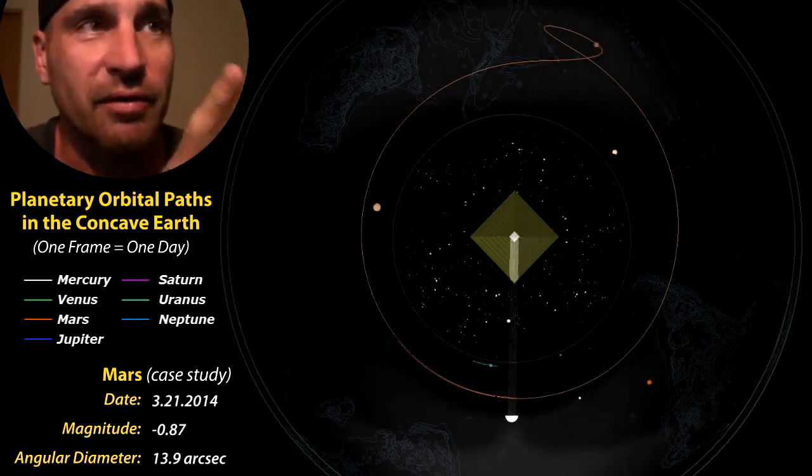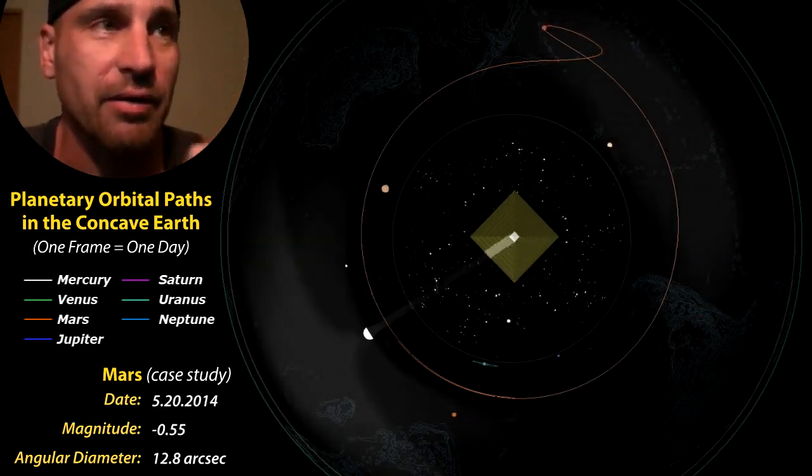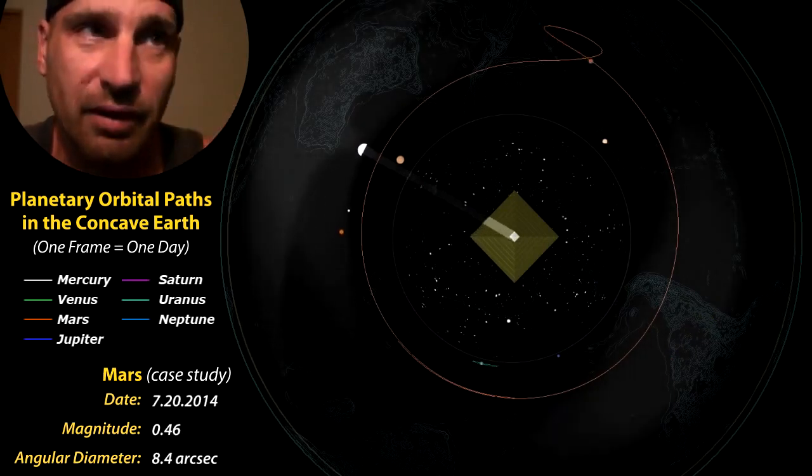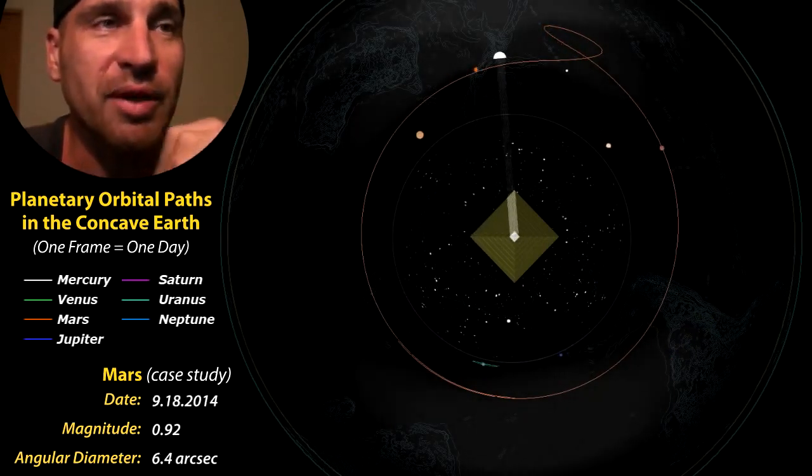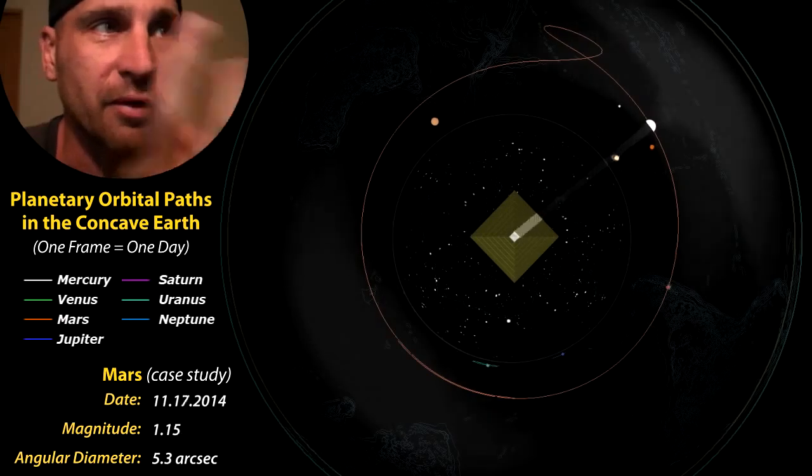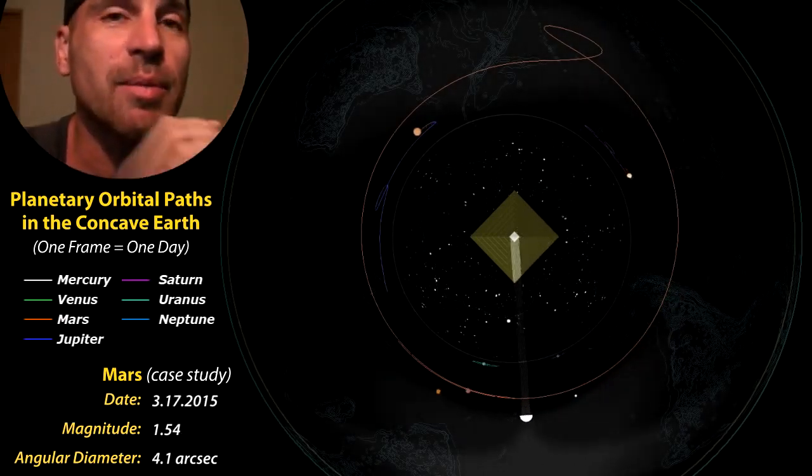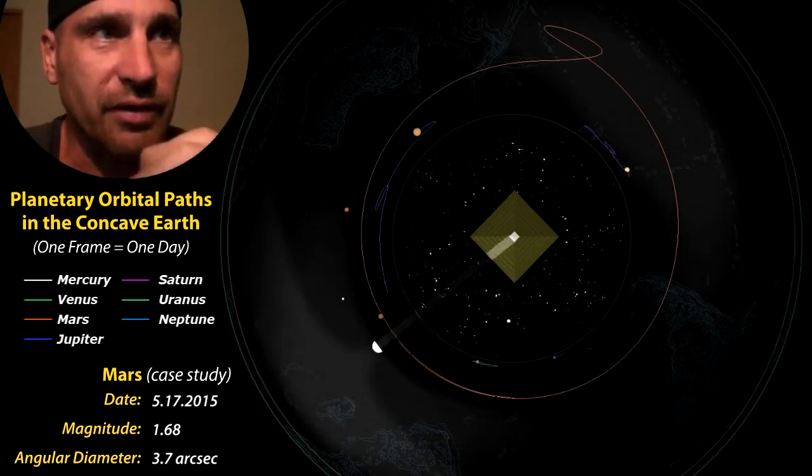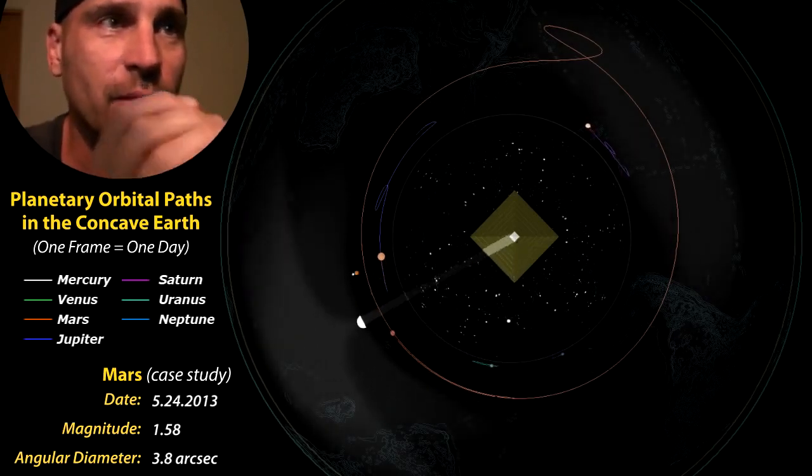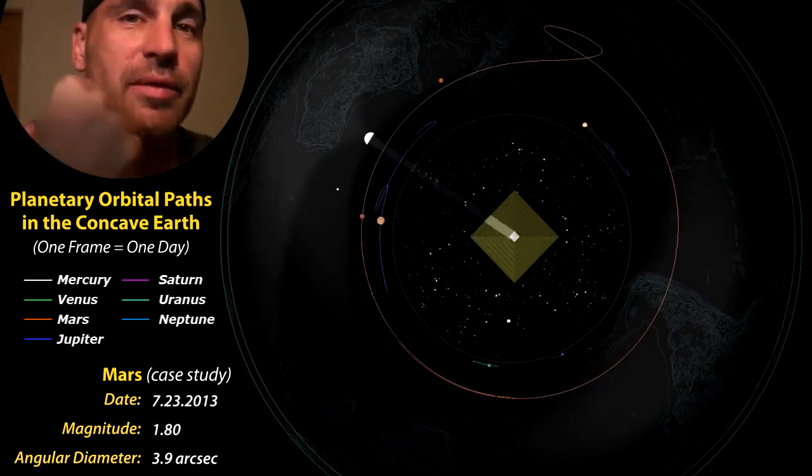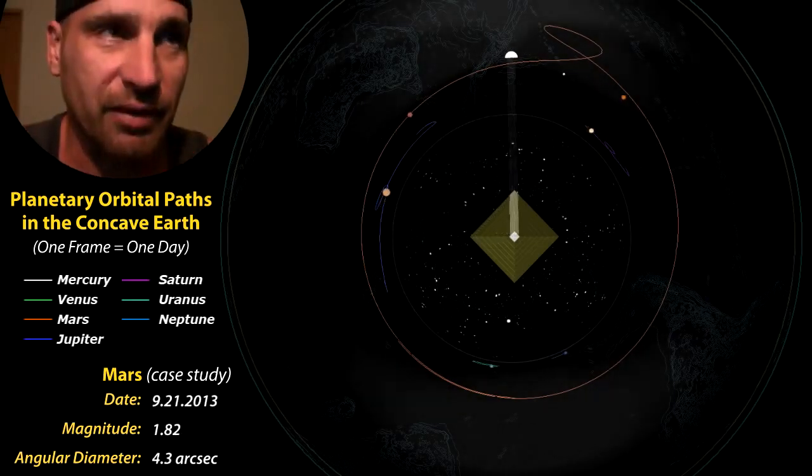Now remember, before I said that the celestial sphere is 23 hours and 56 minutes and four seconds. And so the superior planets, which include Neptune, Uranus, Jupiter, and Saturn, they are going to be more in sync with the celestial sphere. They're not going to appear to move as much with using the celestial sphere as a reference.